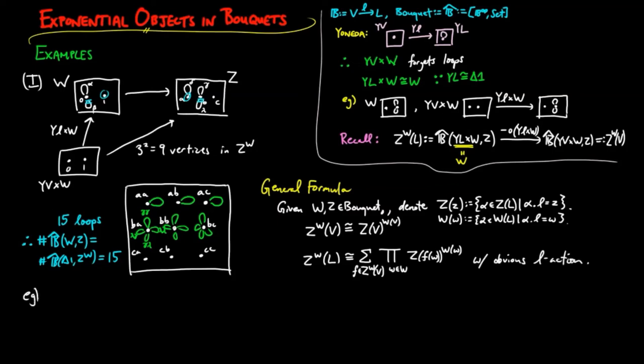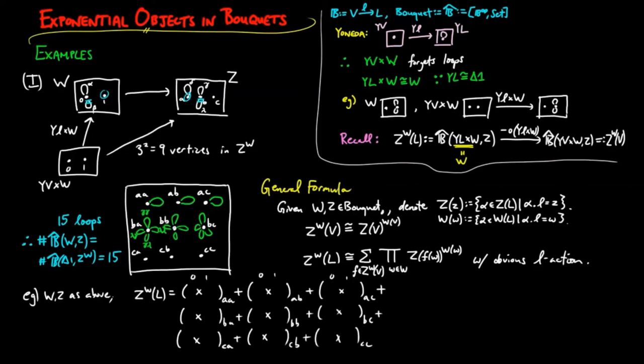So in the example above, the number of petals in Z to the W is the sum of nine products indexed by nine vertices in Z to the W, where each term has two factors indexed by the vertices in W, and wherein each factor is the exponent of Z(f(w)) to the W(w). Careful calculation shows that this sums to 15 petals, where the terms give you the number of petals on each flower.